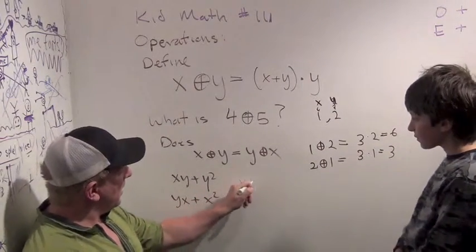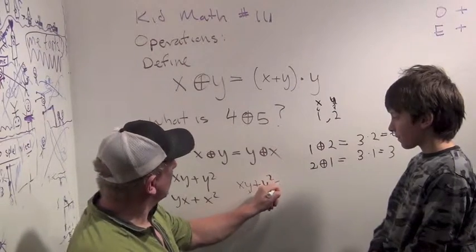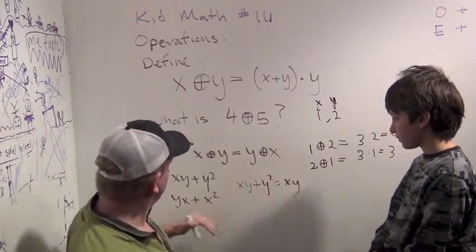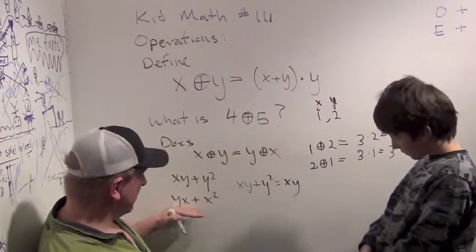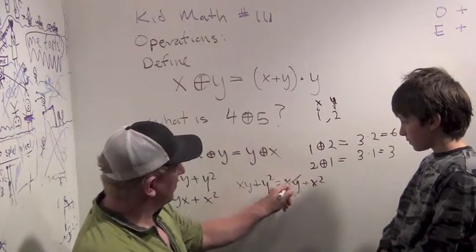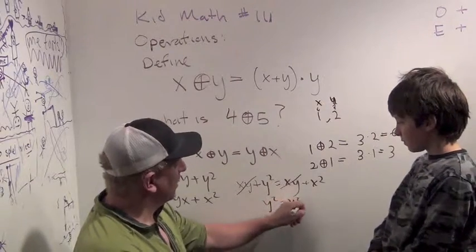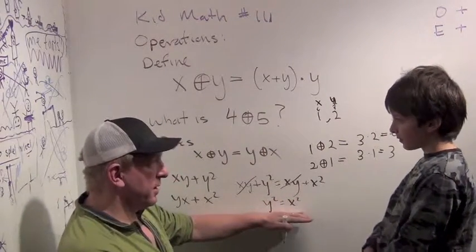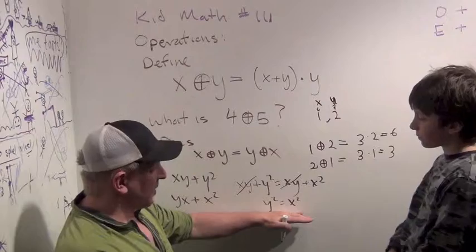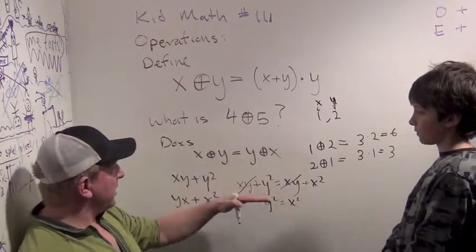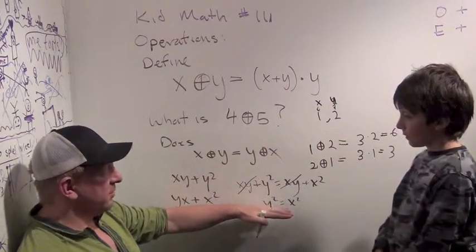So for xy plus y squared to equal xy, we know multiplication is commutative, right? Plus x squared, we can subtract the xy from both sides. We need y squared equal to x squared, or x is plus or minus y. Yeah. Okay. So they're only the same if that y equals x, or y equals minus x.